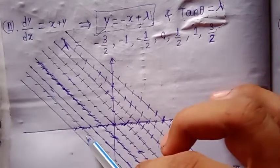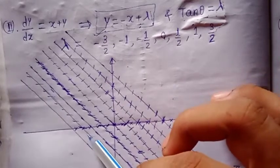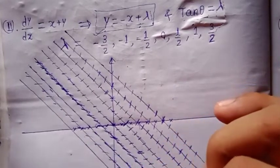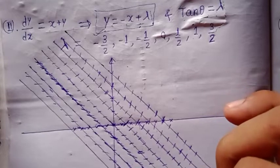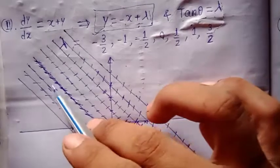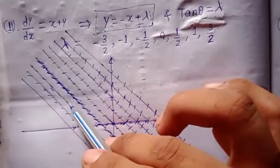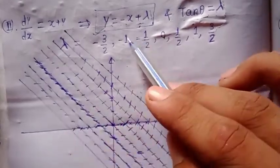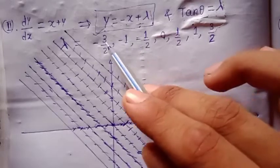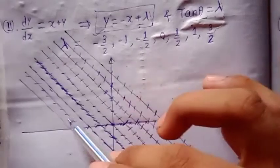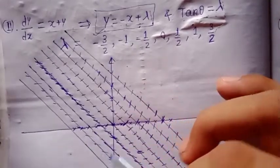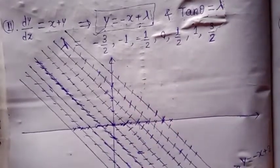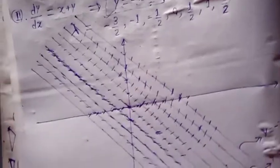For lambda equal to minus 1, the line segments make an angle of 135 degrees — these are the line segments which just coincide with the isocline itself. Similarly, for lambda equal to minus 3/2, we draw the corresponding line segments on that isocline.